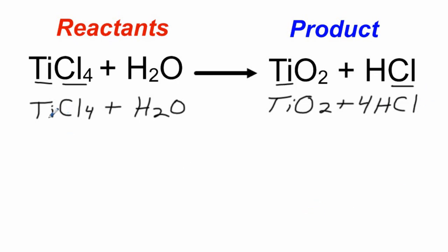Go back and check again. Ti, Ti. Four Cls, four Cls. Looking good. Two H's, whoops, four H's. So what do we have to do over here? We have to add another molecule of H2O or water. So that will make that a two. Let's rewrite it.